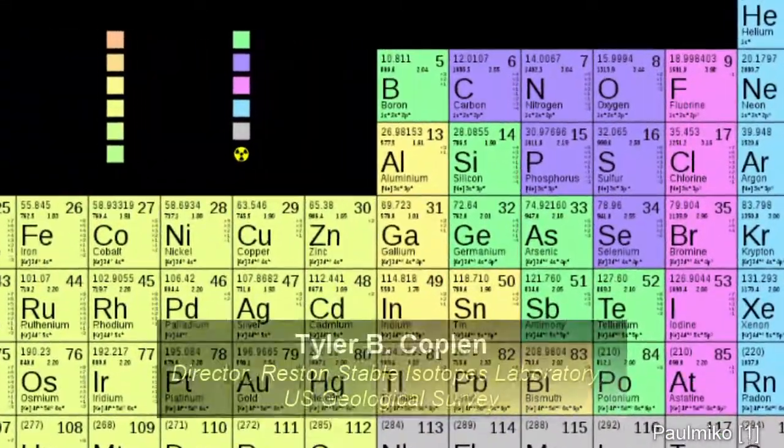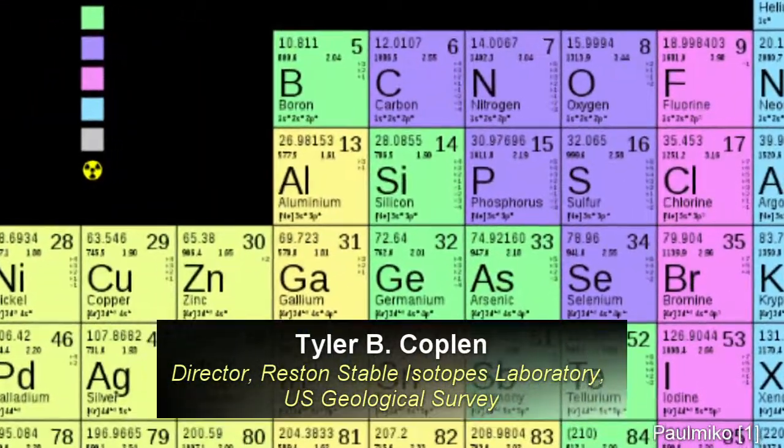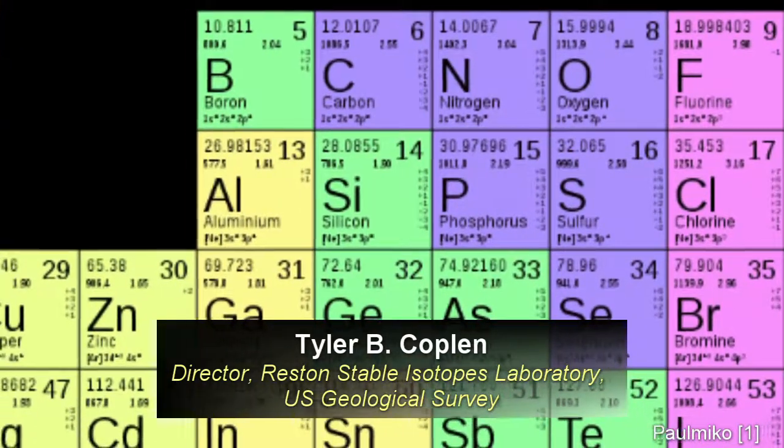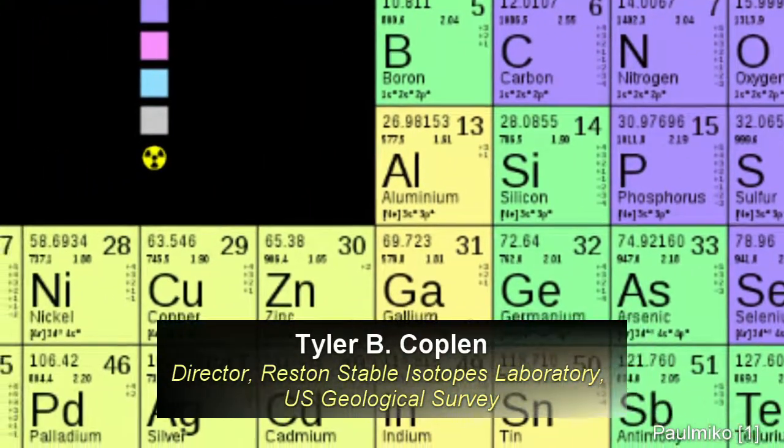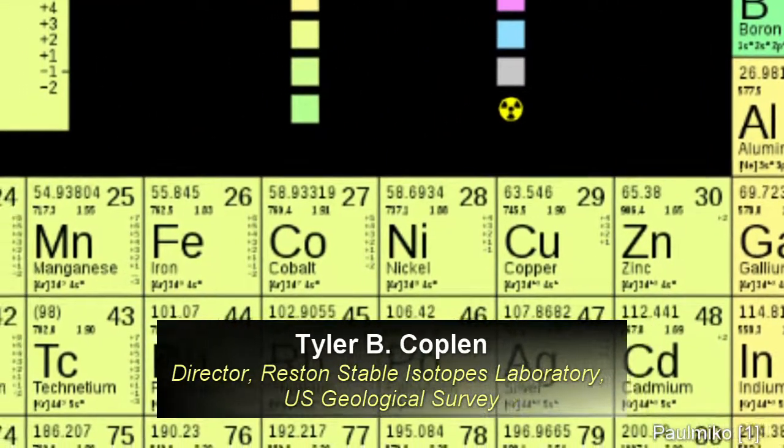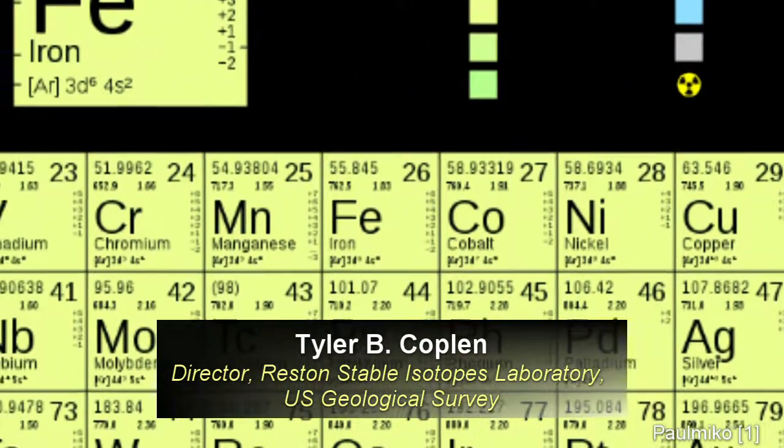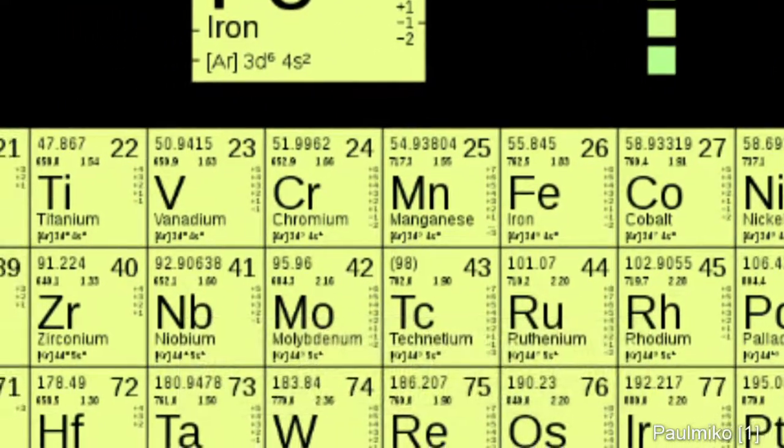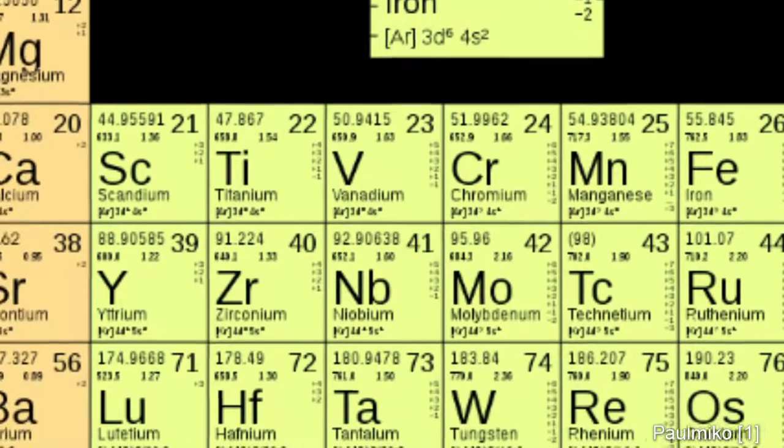Many of us were taught that the standard atomic weights we found in the backs of our chemistry textbooks or on the periodic table of the chemical elements hanging on the wall of our chemistry classroom are constants of nature. This was common knowledge for more than a century and a half, but not anymore.